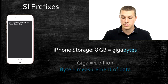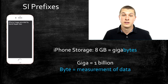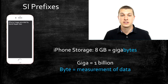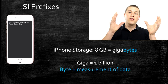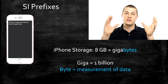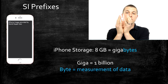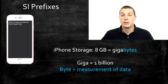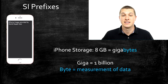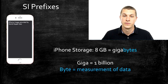Giga just means a billion, so when you hear the word gigabyte it's actually a combination of two things: giga, which means a billion, and bytes, which is just a measurement of data. You put those together and you're saying you have a billion bytes. So if you look at the back of an iPhone and it says 8 GB, that's saying there's 8 billion bytes of data you can store on that iPhone.